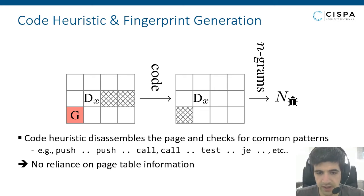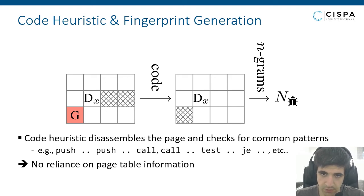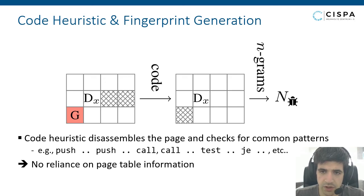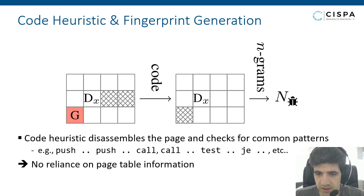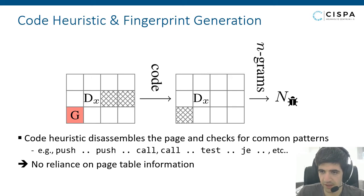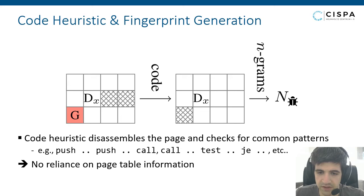Importantly, we do not rely on page table information or OS information because we want our approach to be generic. Our approach depends on nothing except for the instruction set architecture — x86 — but changing that is merely an engineering effort. After this step we have a fingerprint that can be used for detecting the presence of a malware family in memory dumps.